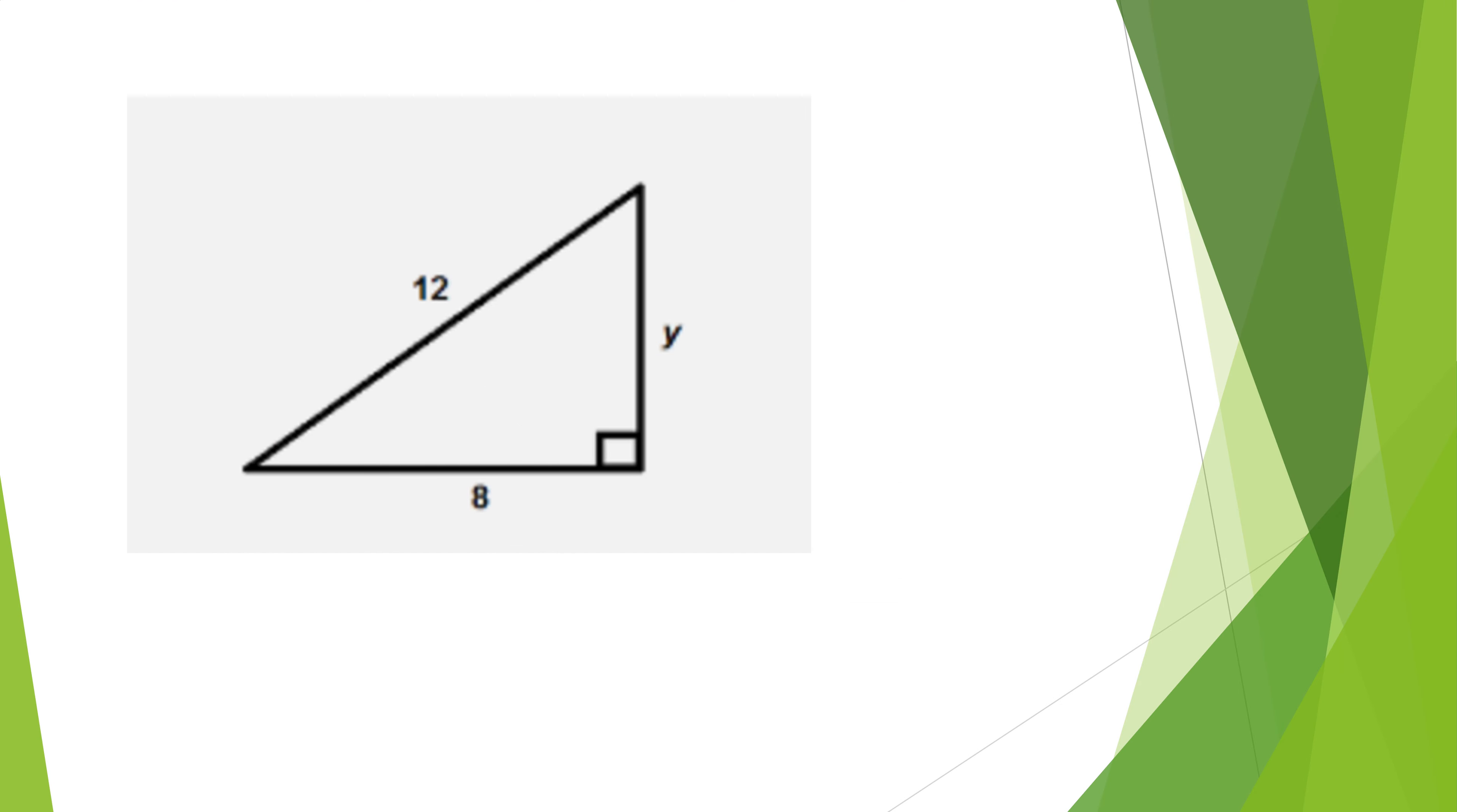Find y. So leg squared plus leg squared is hypotenuse squared. 8 squared plus y squared is equal to 12 squared. 64 and y squared is 144. Sorry about the phone. Subtracting 64, y squared is 80. And when I square root, I get y equals the square root of 80. If you wanted to round that to the nearest hundredth, it would be 8.94.